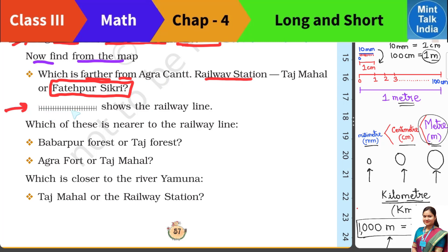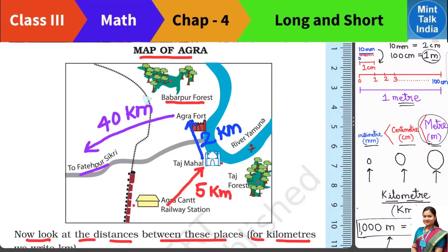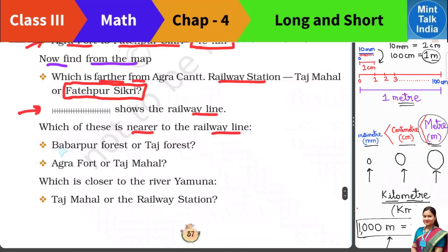The next question: the dotted line shows the railway line. Which of these places is nearer to the railway line? Looking at the map, our answer is: Babarpur Forest is nearer to the railway line.